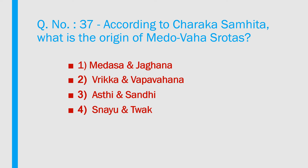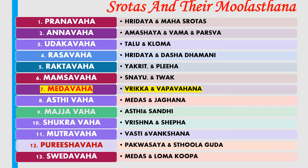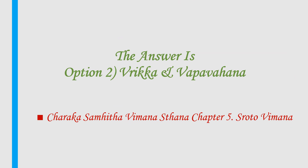Question number 37: According to Charaka Samhita, what is the origin (moolasthana) of medhovaha srothas? 1) Medhas and jagana, 2) Vrkka and vapavahana, 3) Asthi and sandhi, 4) Snayu and twak. Answer is option 2 — Vrkka and vapavahana. There are 13 srothas. Reference: Charaka Samhita, Vimana Sthana, chapter 5, Sroto vipana.